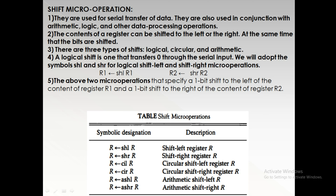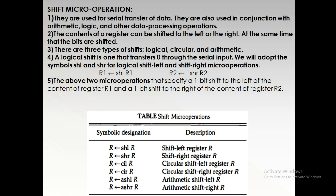What is a shift micro operation? It is used for transferring data from one register to another register, or within the same register. This shift micro operation is used in conjunction with arithmetic, logic, and other data processing operations. While performing an addition, the output sum of two numbers is transferred to another register or within the same register.